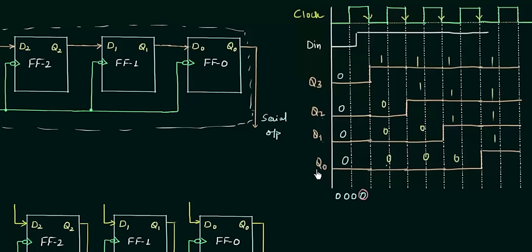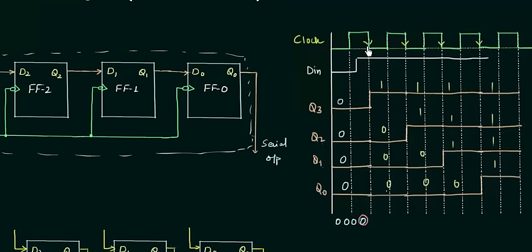I am going to explain a very important point here. The number of clock pulses required to store the data is 4. But these 4 clock pulses are not sufficient to have the data outside the register. We need more clock pulses to have our data out.